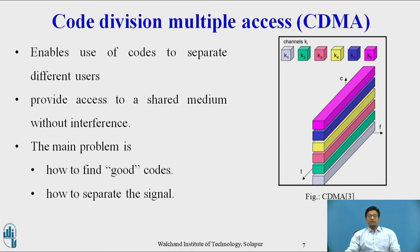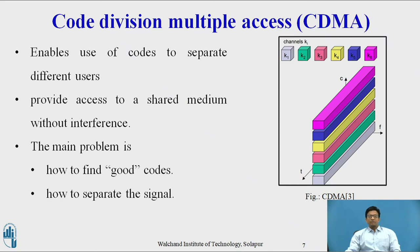Next is code division multiple access. The figure shows all channels Ki using the same frequency at the same time for data transmission. Separation is achieved by assigning each channel its own code — guard spaces are realized using codes with necessary distance in the code space. This enables the use of code to separate different users in code space and provide access to the shared medium without interference. The main problem in CDMA is finding good codes and separating signal from noise generated by other signals and the environment.